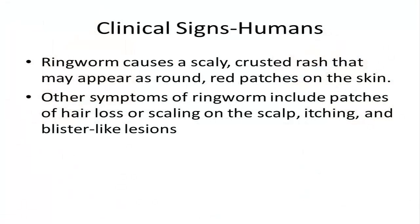In humans, ringworm causes a scaly, crusted rash that may appear as round, red patches on the skin. Other symptoms of ringworm include patches of hair loss or scaling on the scalp, itching, and blister-like lesions. The incubation period in people may vary from a few days to a couple of weeks, depending on the specific fungus that is causing the ringworm symptoms.